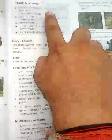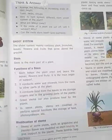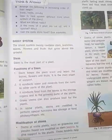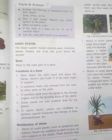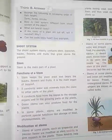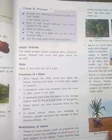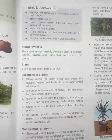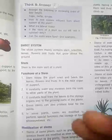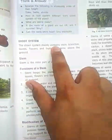Now arrange the following in increasing order of their height: you can arrange herbs, shrubs, and trees according to their heights. You can do this yourself. If you have any doubts, consult with me. This is your task to complete in your book. Next is the shoot system. The shoot system is the above-ground part of the plant body.